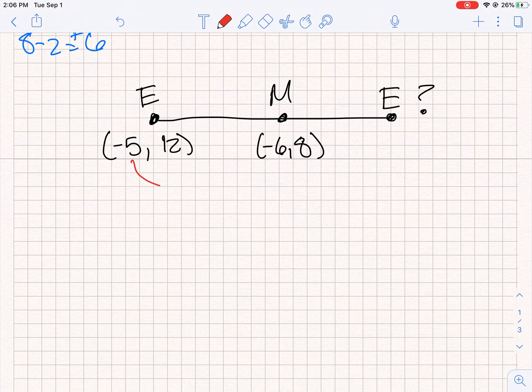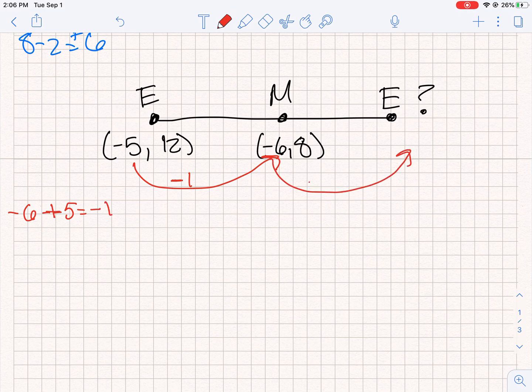So looking at my x's, I want to see how do I get from -5 to -6. So again, if you can think about it visually, you should see that we minus 1 or -6 minus -5. Well, when we combine that, that gives me -1. So now, I need to subtract 1 from -6. So -6 minus 1 would be -7.